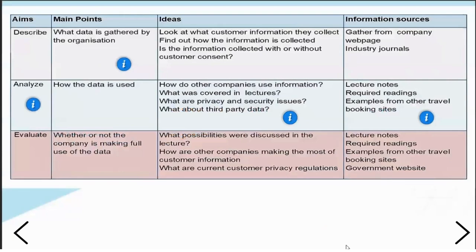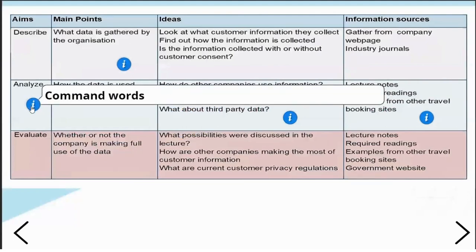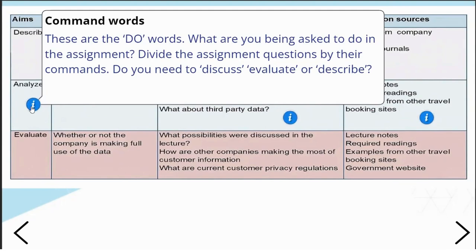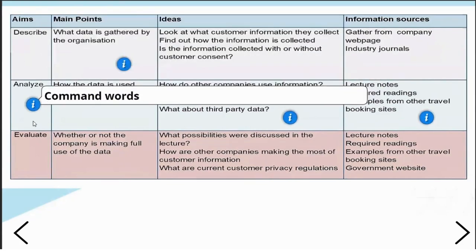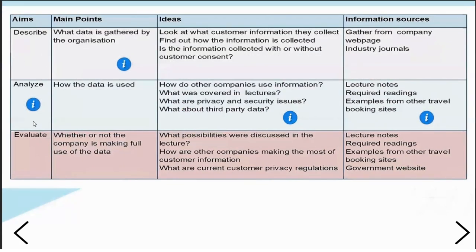One way to break down your assignment question — because these questions are often complicated with different parts — is to make a grid. I've broken the fictional Booking.com assignment into its three different parts and aims: describe, analyse, evaluate. Think of these as doing words — they're telling you what you need to do. One way students lose marks is by not taking enough notice of these command words.